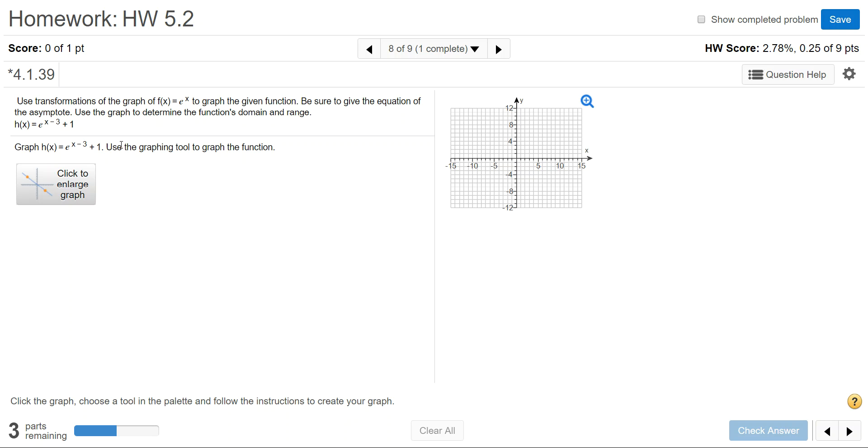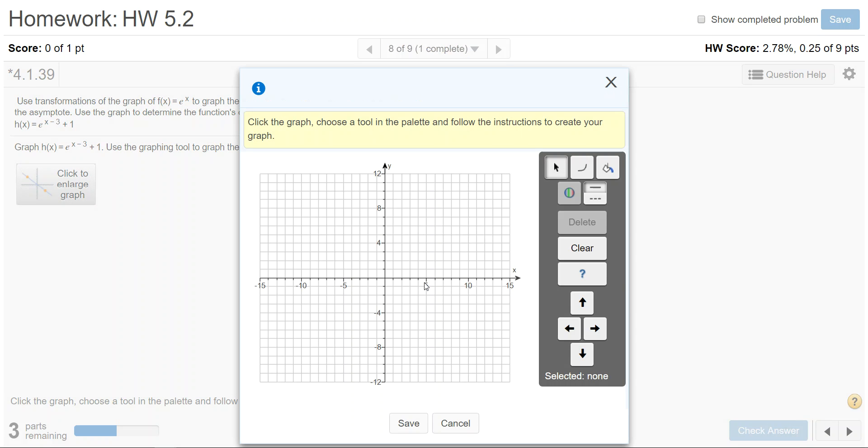Notice that in the instructions, it doesn't mention graphing the asymptote. So for this graphing tool, you'll see that you do not have the line tool to graph the asymptote. For this particular example, it's going to automatically plot the asymptote for you.